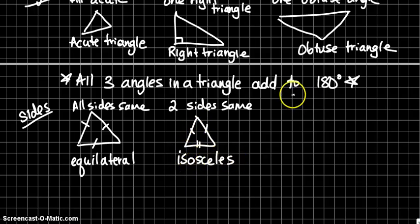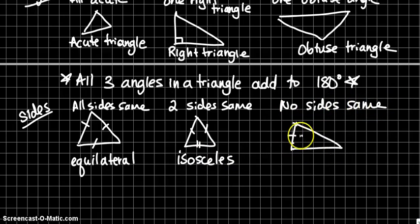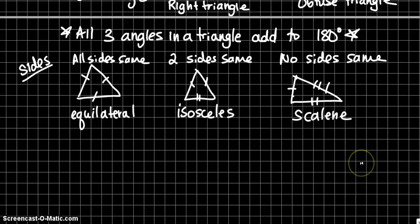And if you have a triangle where no sides are the same, it's called scalene. So equilateral, isosceles, and scalene.